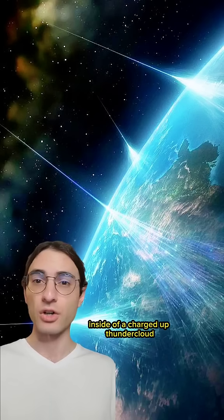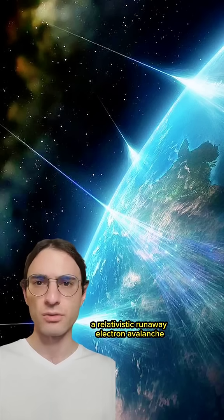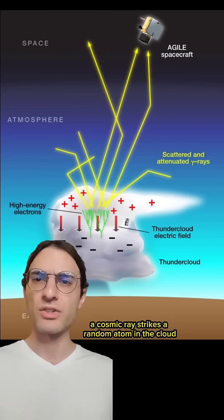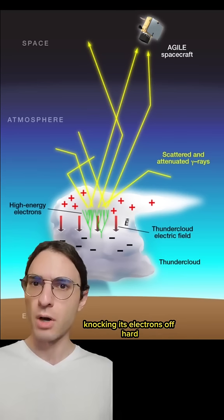And when that happens inside of a charged-up thundercloud, an interesting phenomenon happens: a relativistic runaway electron avalanche. In such an avalanche, a cosmic ray strikes a random atom in the cloud, knocking its electrons off hard.